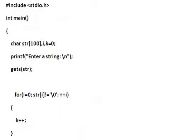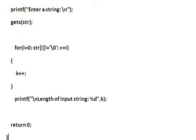The same program can be written using a for loop to find the length of the string. Whatever program you write using while, you can also rewrite using a for loop. The for loop notation: i is equal to 0, str[i] not equal to backslash 0, and ++i. Inside we have k++. So the length of the input string is k.